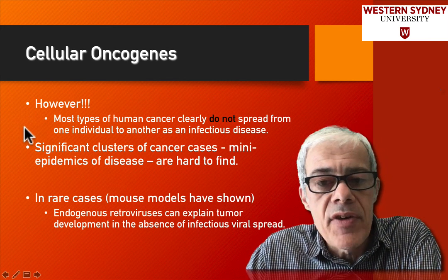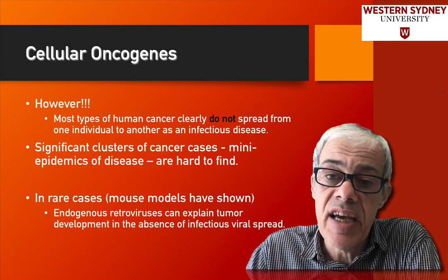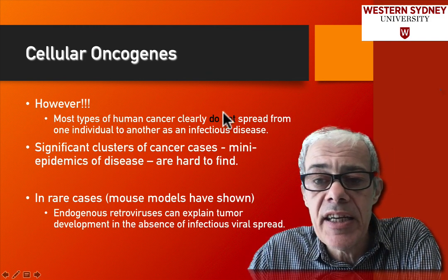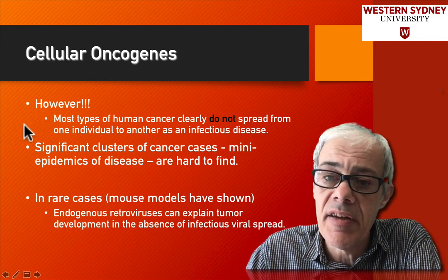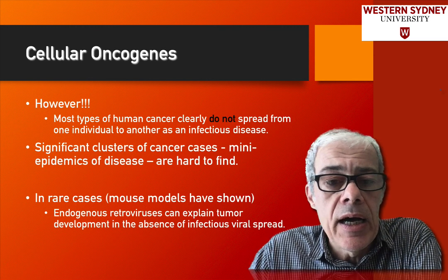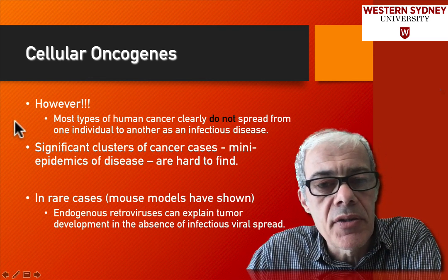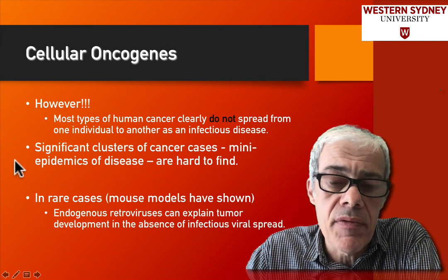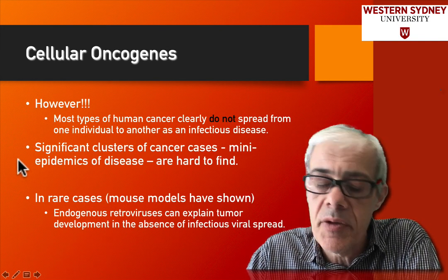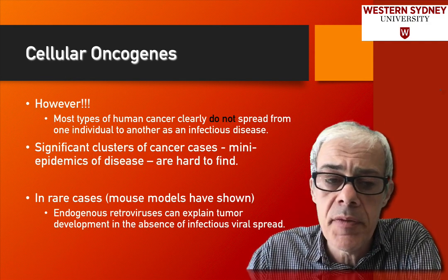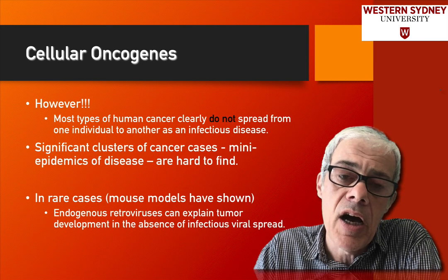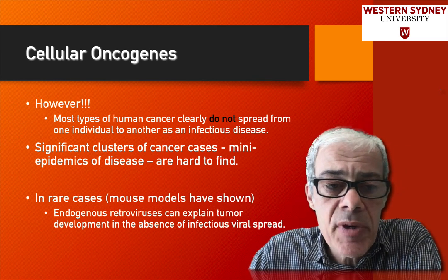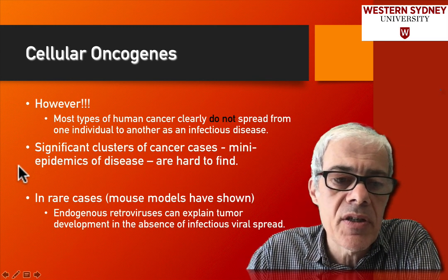Whilst there was good evidence to suggest maybe this was happening, there was also some really clear evidence indicating that viruses are not to blame for most cancers. Most types of cancers clearly don't spread from one person to another like an infectious disease. Also, if viruses were causing widespread tumor formation for many cancer types, you would see epidemics of viruses as you see flu epidemics — waves of cancer passing through the population, which you don't see, and clusters of a particular cancer breaking out. There was a little bit of evidence that maybe sometimes this was being observed, but generally it wasn't the case.